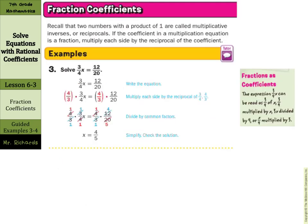Fractional coefficients also fall under rational coefficients. Recall that two numbers with the product of one are called multiplicative inverses or reciprocals. Many of us learned when dividing fractions to keep, change, flip — that whole flipping thing is reciprocals, and reciprocals are multiplicative inverses. So they all go hand in hand.